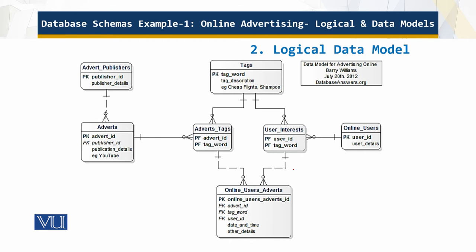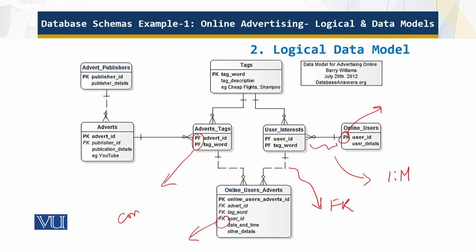Let me define certain things just to recall: this over here is a one-to-many relationship. This dotted line corresponds to the foreign keys. PK of course is the primary key, and PF over here is something you might think is new — this is the composite key, meaning it is both a primary and a foreign key.